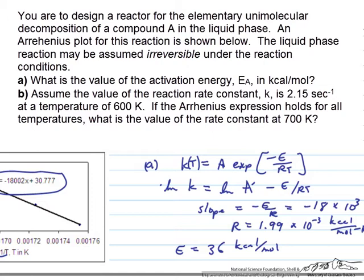In part b you're asked to assume that the Arrhenius expression does hold and to use it to calculate, given the value of the rate constant at 600 Kelvin, a new rate constant at 700 Kelvin. This is also a pretty straightforward problem.